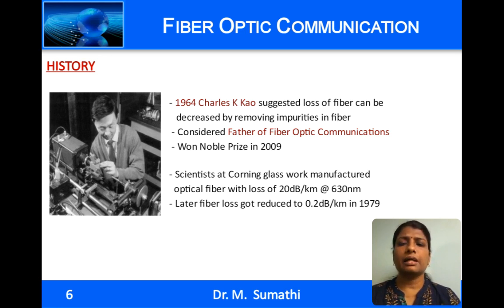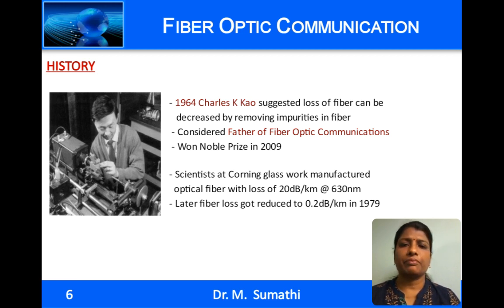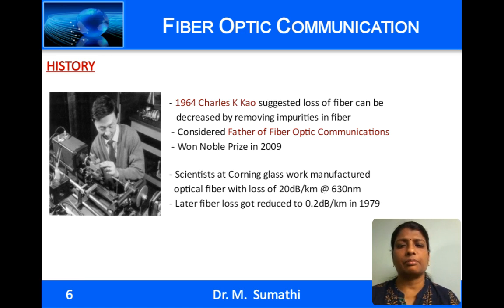In later years, manufacturing technology improved and fibers with a loss of around 0.2 dB per kilometer were manufactured in the year 1979. This loss of 0.2 dB per kilometer is close to the lower theoretical limit due to Rayleigh scattering. In fact, fibers manufactured today have an attenuation or loss close to this value.